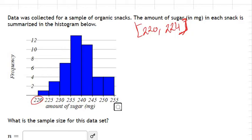To find the class width, you can find it by finding the difference between two consecutive lower class limits or two consecutive upper class limits. So if you take the number 225 and subtract 220, that will give you the class width, which is 5.